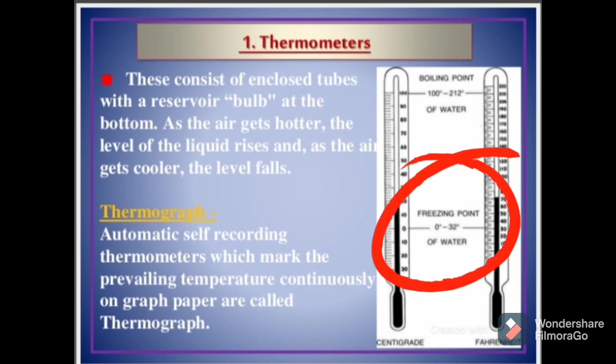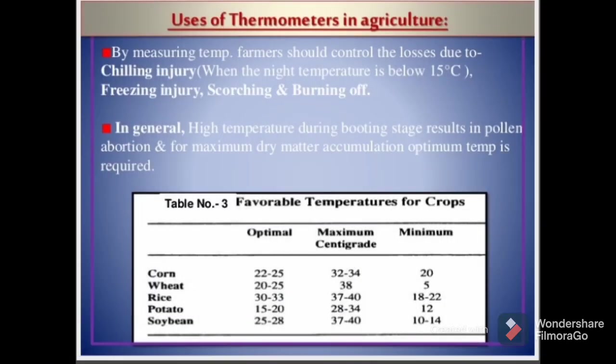Water reaches its boiling point at 100 degrees Celsius or 212 degrees Fahrenheit, and freezes at 0 degrees Celsius or 32 degrees Fahrenheit. Uses of thermometers in agriculture: by measuring temperature, farmers can control losses due to chilling injury, which happens when the night temperature is below 15 degrees Celsius, as well as freezing injury, scorching, and burning off. In general, high temperature during the booting stage results in pollen abortion, and for maximum dry matter accumulation, optimum temperature is required.